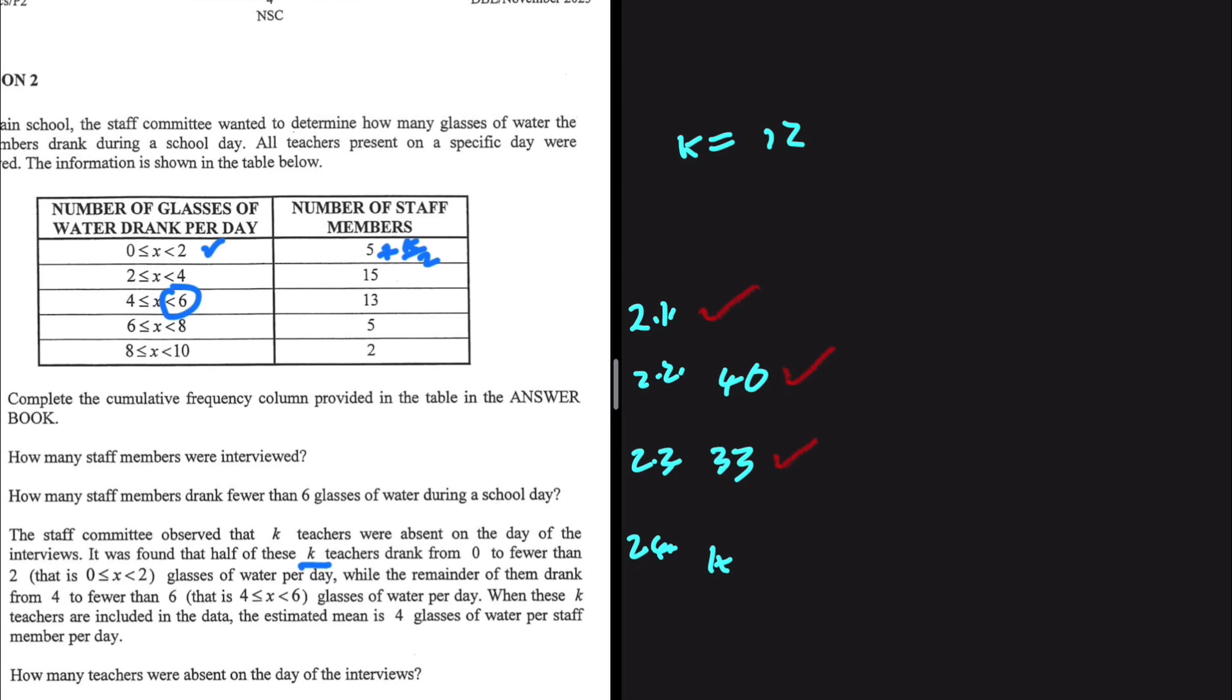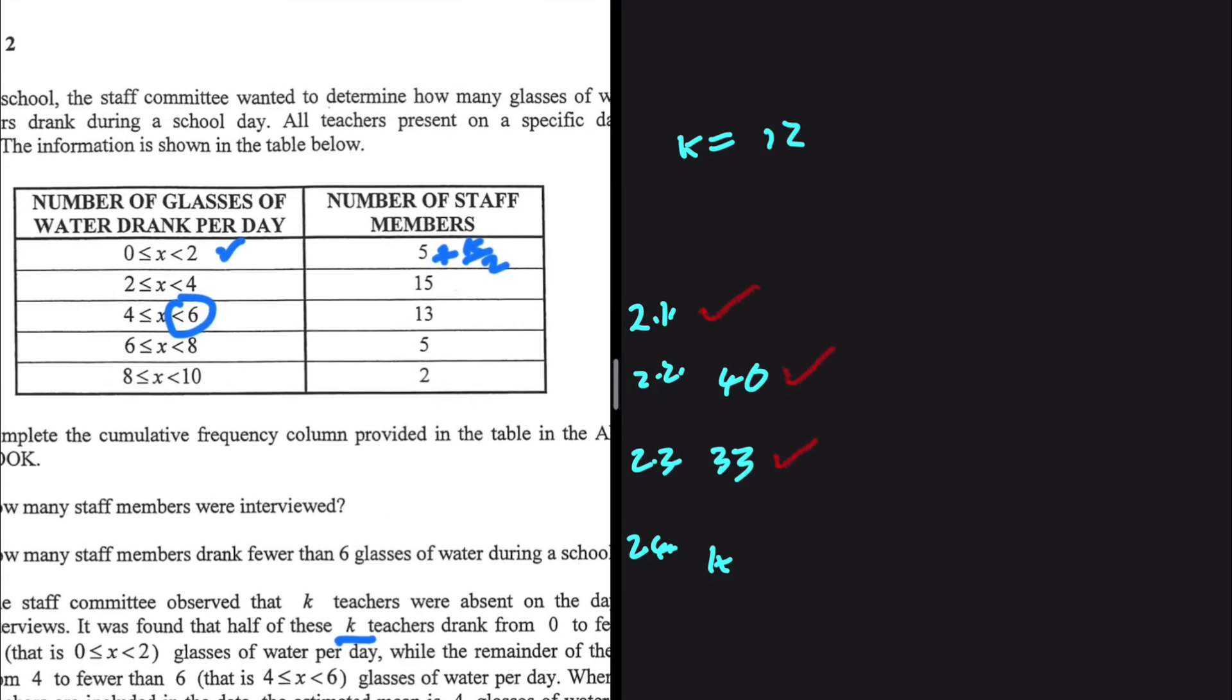Let's carry on reading our information. While the remainder of them drank from four to fewer than six. So four to fewer than six we have another k divided by 2. We have k teachers that were absent, half of them drank between zero and two, half of k is k divided by 2.